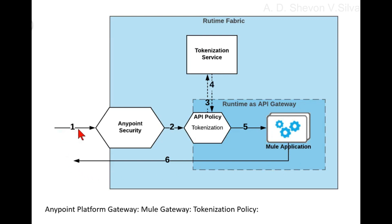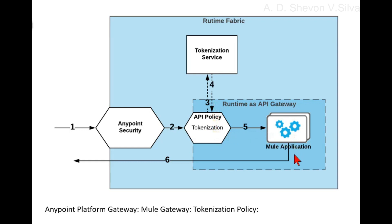Here, a request is connected to Anypoint security, and Anypoint security is connected to API policy tokenization. API policy is connected to tokenization service, and tokenization service is connected back to API policy. API policy is connected to the mule application, and the mule application returns the result.